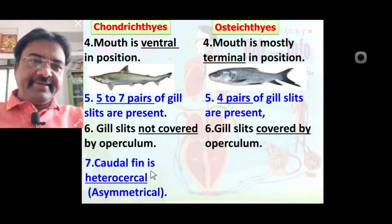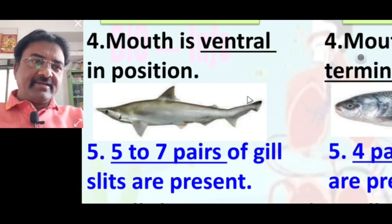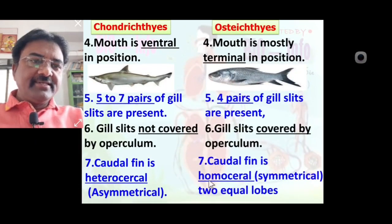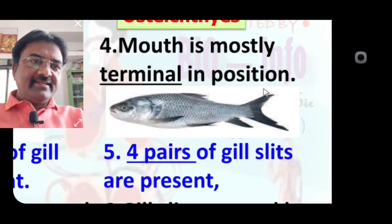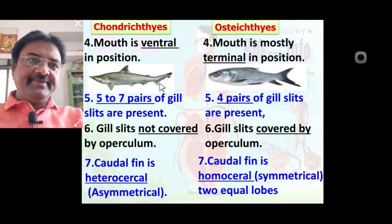Seventh character: the caudal fin is heterocercal — asymmetrical — in Chondrichthyes, as seen in the diagram where the caudal fin is asymmetrical. In Osteichthyes fish, the caudal fin is homocercal — symmetrical — with two equal lobes easily seen. On the basis of the caudal fin, we can also identify Chondrichthyes and Osteichthyes fishes.